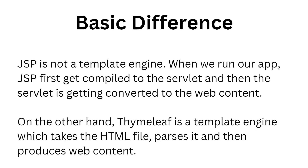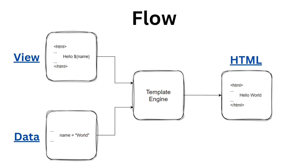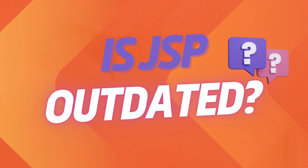Now let's talk about the basic differences. JSP is not a template engine — when we run our app, JSP first gets compiled to a servlet, and then the servlet is converted into web content. On the other hand, Thymeleaf is a template engine which takes the HTML file, parses it, and produces web content. Looking at the basic Thymeleaf flow: we have a view with a variable name, and data where name equals a value. The template engine combines the view and data to produce the final HTML output — for example, 'Hello World'. That is the basic flow of a template engine.